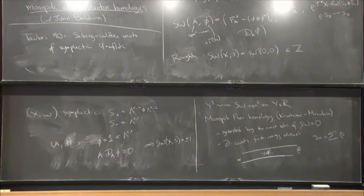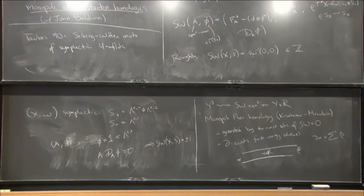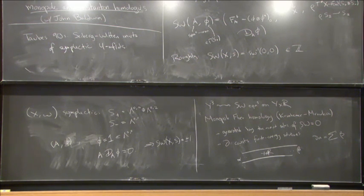We write HM-hat of (Y, s), where s is a spin-C structure on Y — this is the monopole Floer homology, or one variant of it, of Y in that spin-C structure.